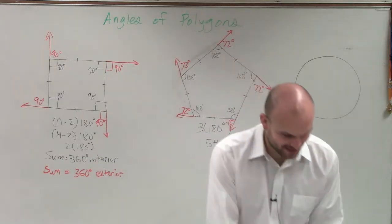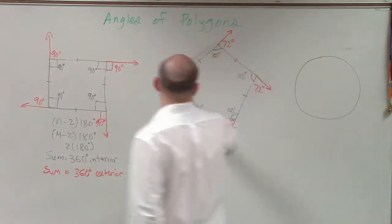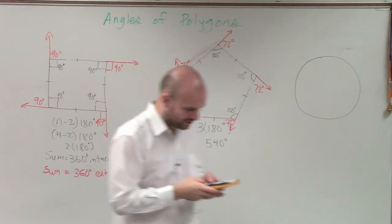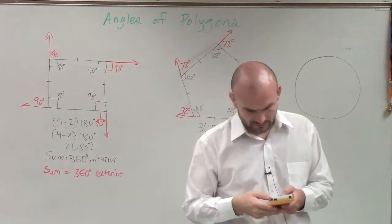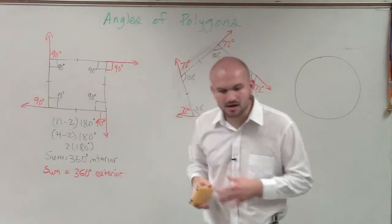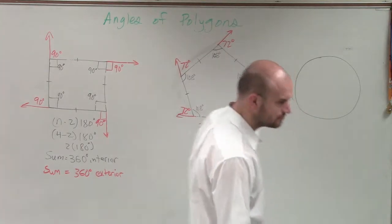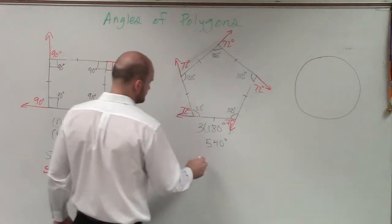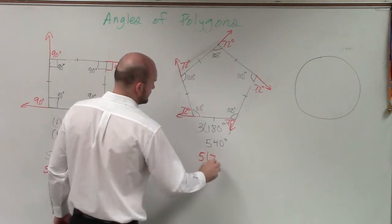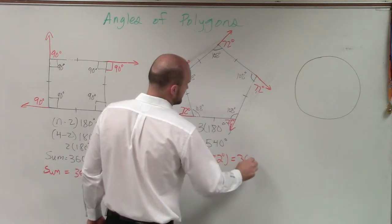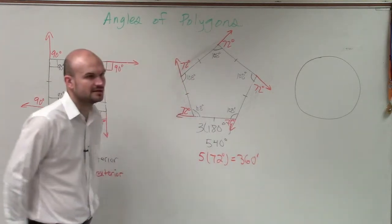All right? So let's go ahead and add up then all of these. So I have one, two, three, four, five angles that are 72 degrees. So 72 times 5. 5 times 72 degrees equals 360 degrees.